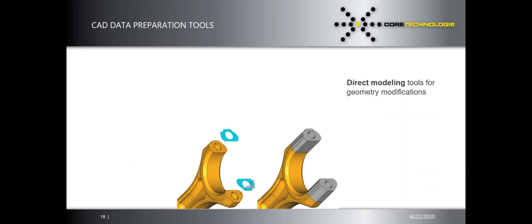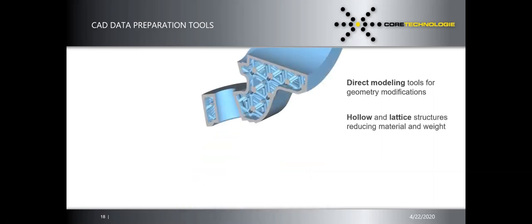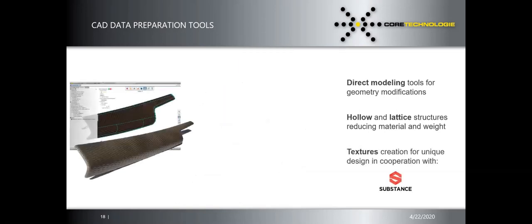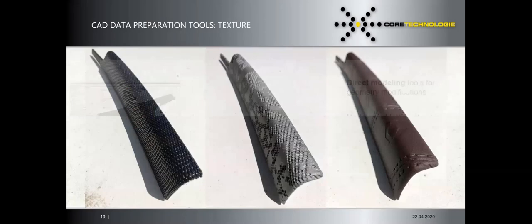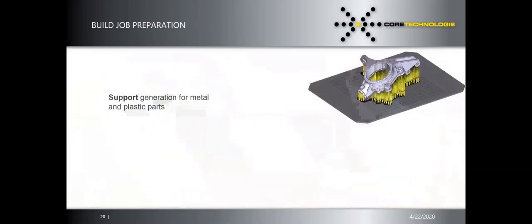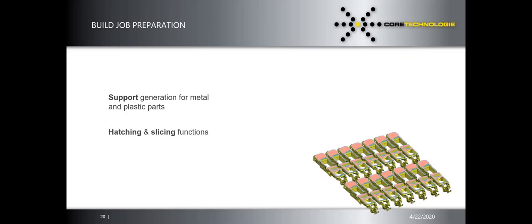We also have capabilities to modify models directly within the software — scaling, changing specific holes, and direct modeling. Hollow and lattice structures will be shown today. Texturing is also included, which many competitive solutions lack — we have hundreds of thousands of textures available. Support structure generation for metal and plastic printing is also integrated.